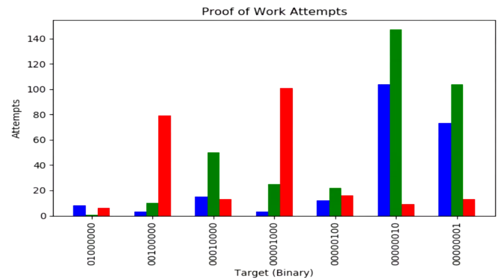As a bonus, I tied a visualization into this. You can pull data off the device with a USB cable — it logs to a CSV file — and you can run that through a Python script that graphs the difficulty targets versus the number of attempts the processor went through to find a solution.